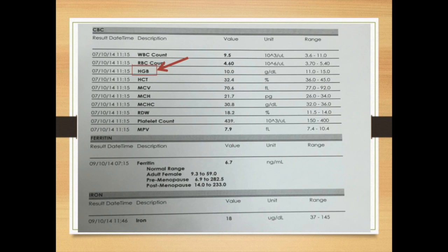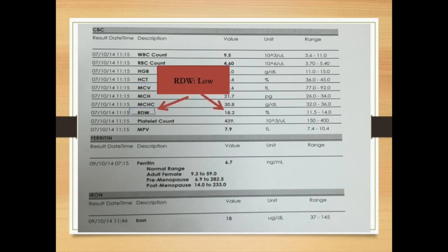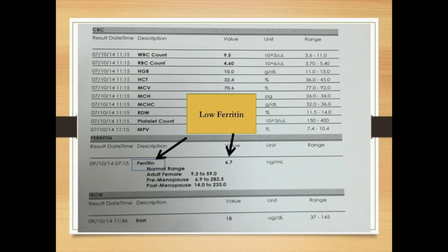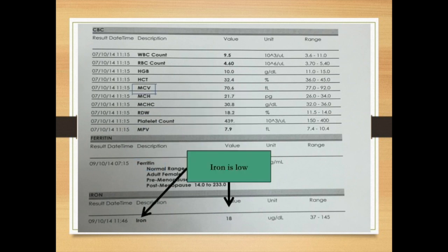The first thing to look at again is hemoglobin — you can see it's low, so we're dealing with anemia. Then we look at MCV, which is low as well, so we say it's microcytic anemia. Note that MCH and MCHC are low as well, which goes with microcytic anemia. The RDW is low, which goes with iron deficiency anemia.